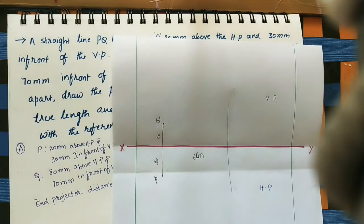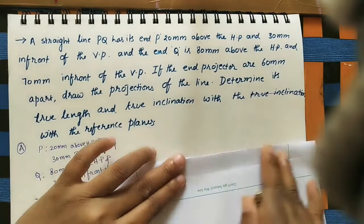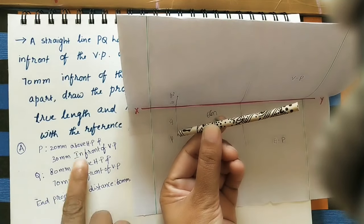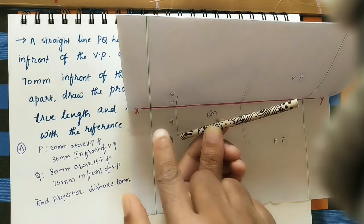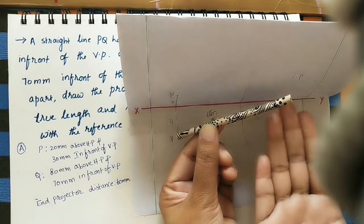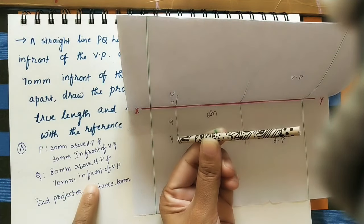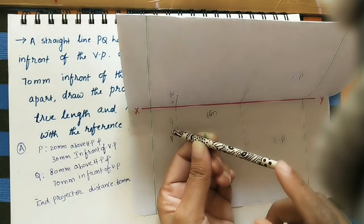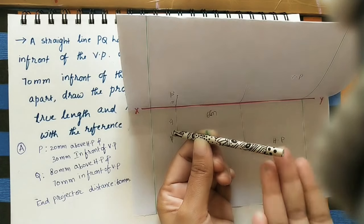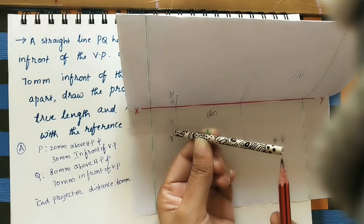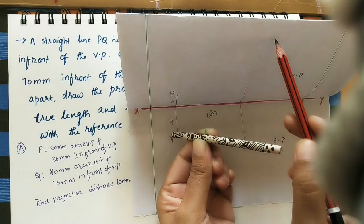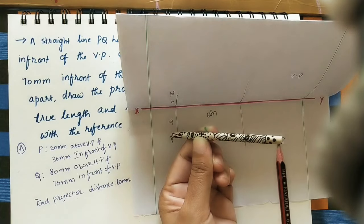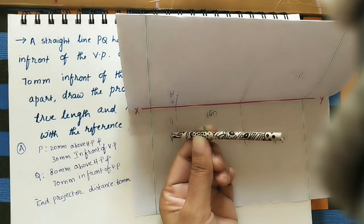For marking the Q position, the planes are in 3D form. This is the P point already marked, and Q is 80 mm above HP. This Q point is 80 mm above the horizontal plane and 70 mm in front of VP. In the front view, we can see Q-dash on the vertical plane — it is 80 mm above HP. So above the XY line, mark 80 mm and place Q-dash. After that, the top view of Q is 70 mm from the vertical plane.